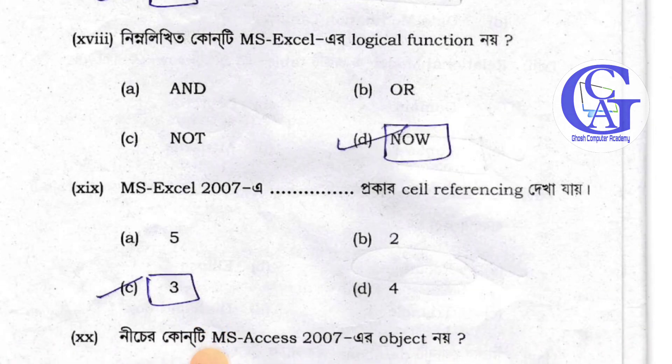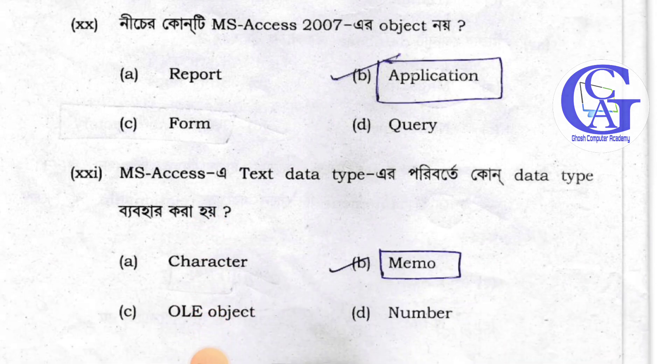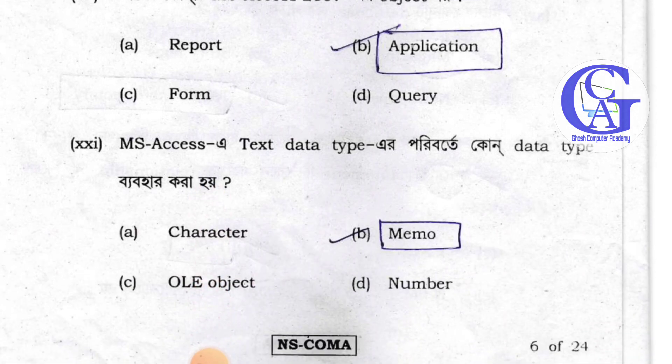Excel 27. Quota cell reference 3. Cell reference 3. Excel 27. Access 27. Which object 9? Application. Number B — answer. Number 1.